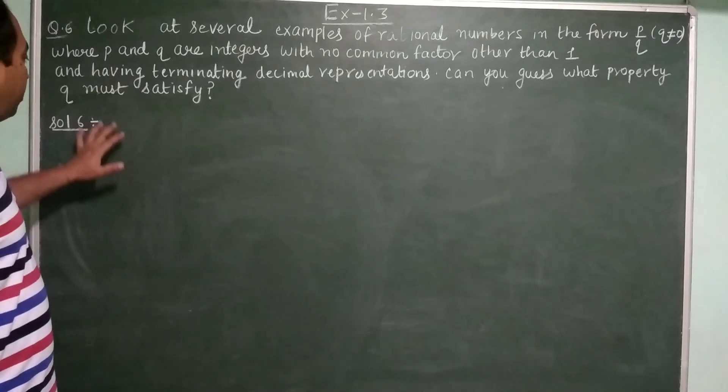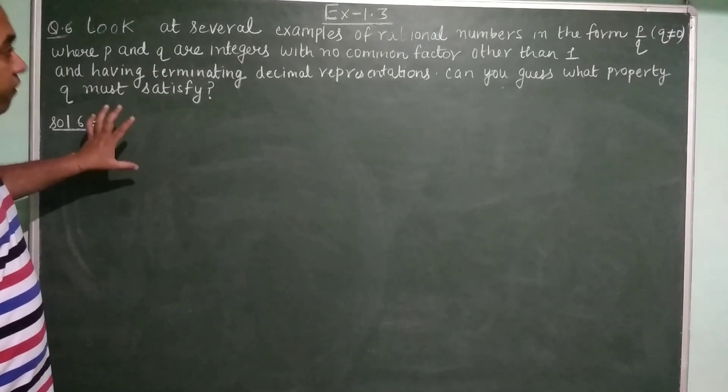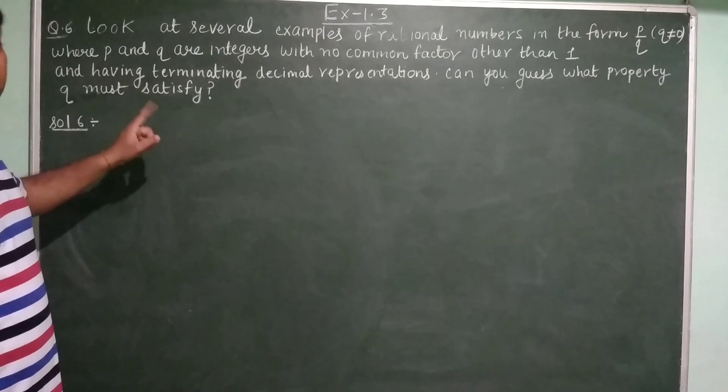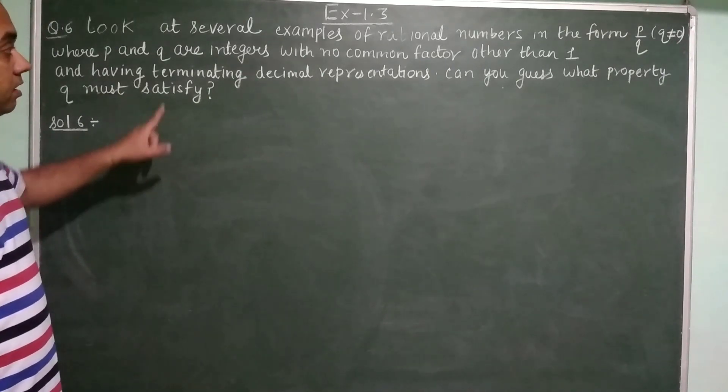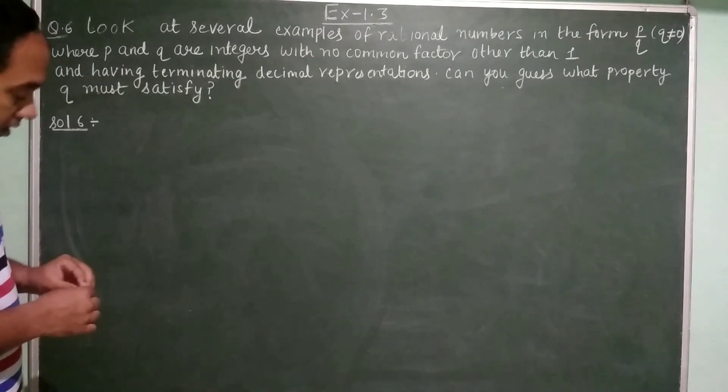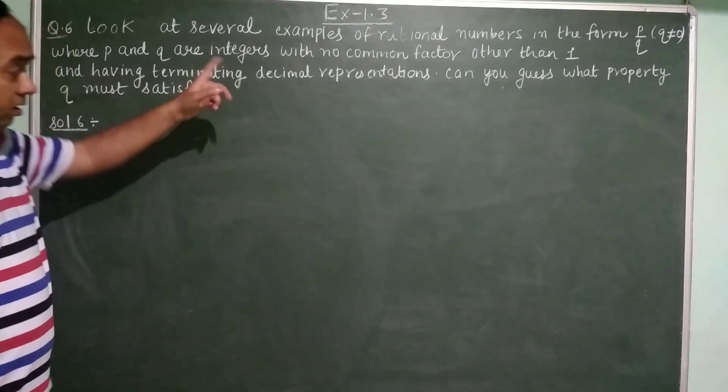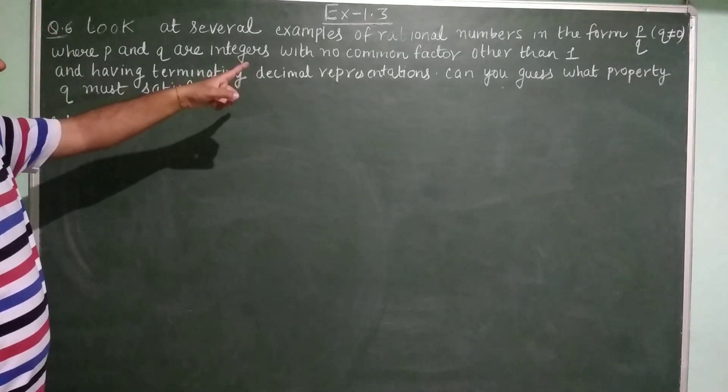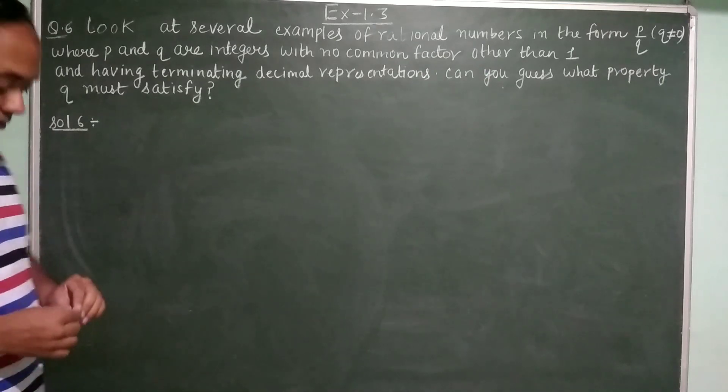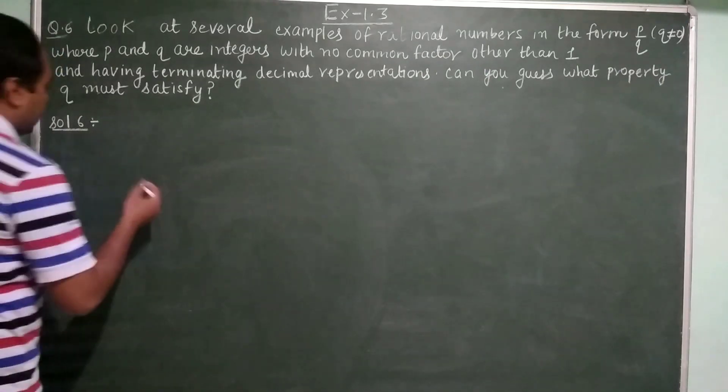Over here they are saying that first we need to write some examples of rational numbers which are having terminating decimal extensions. And these rationals will have no common factor other than 1.